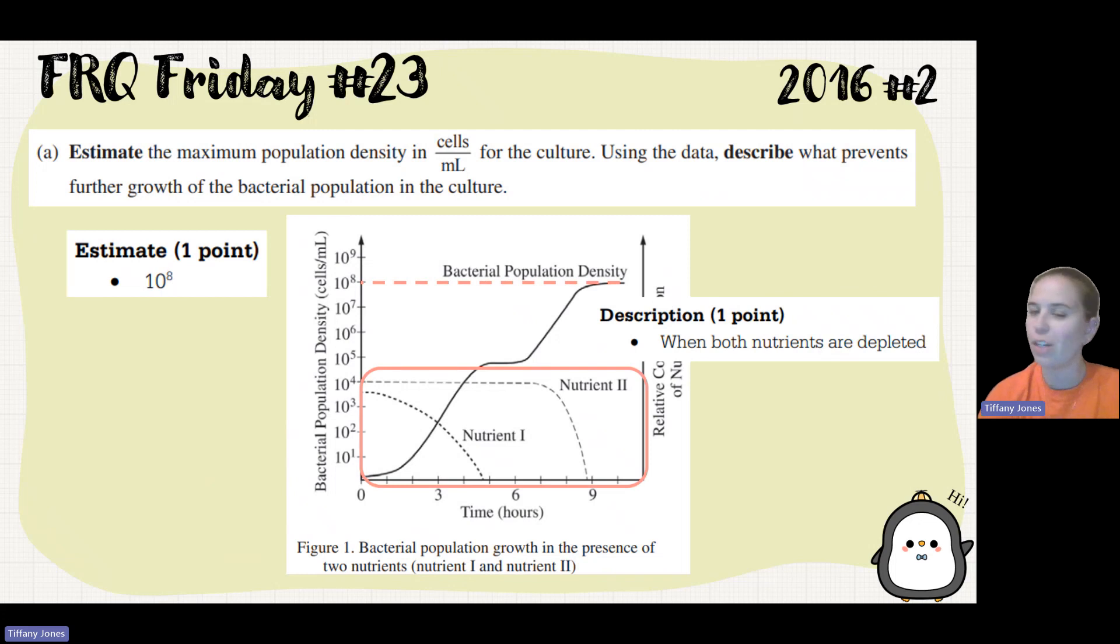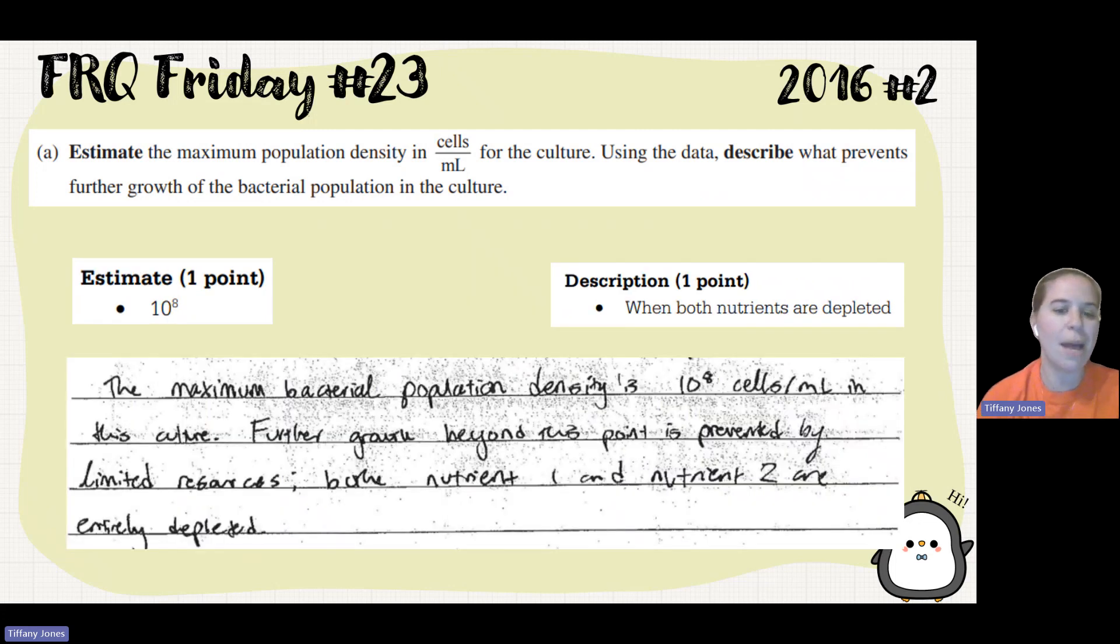So the student said the maximum bacterial population density is 10 to the 8 cells per milliliter in this culture. Further growth beyond this point is prevented by limited resources. Both nutrient one and two are entirely depleted.